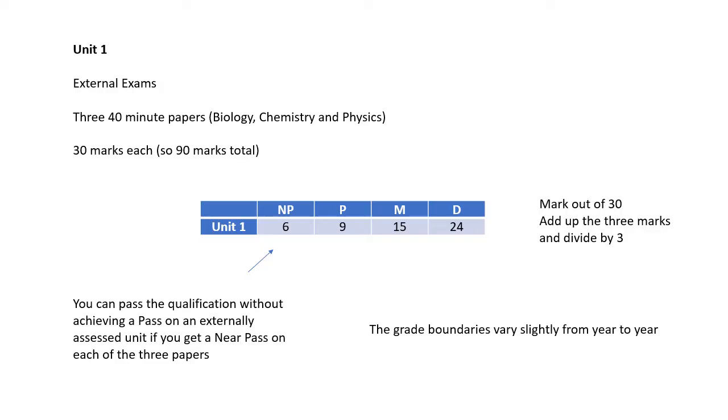Now, near pass, if you get six, then you get a near pass. If you get less than six, you get nothing. Pass is if you get nine out of 30. Merit, if you get 15 out of 30. Distinction, if you get 24 out of 30. So half marks is a merit, 15 out of 30.